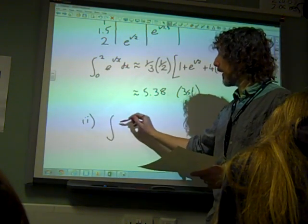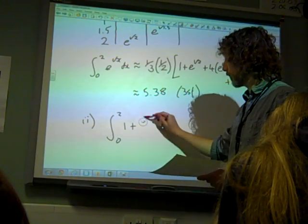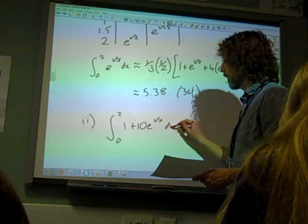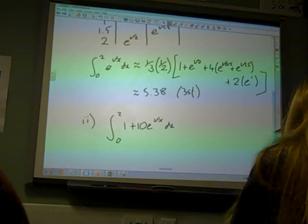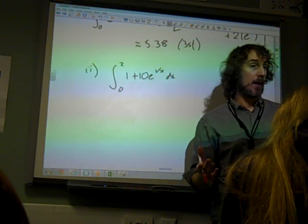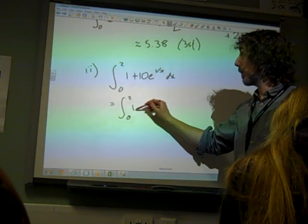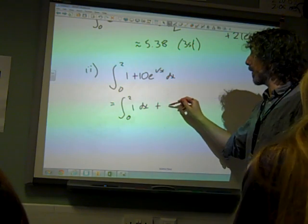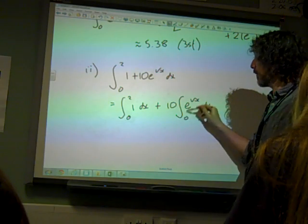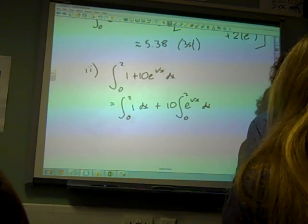But for part 2, what we're actually doing is the integral of 1 plus 10 e to the root x. So actually what we're thinking here is we know we can split up integrals. That's the same as the integral of 1 between 0 and 2 plus 10 times the integral of e to the root x between 0 and 2. That's how the integral splits up.